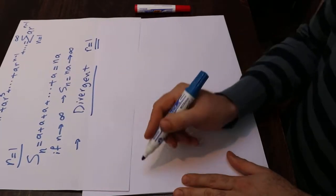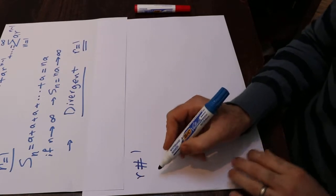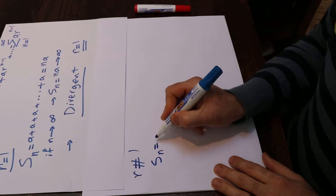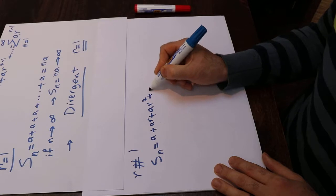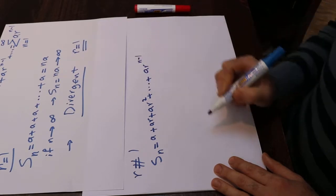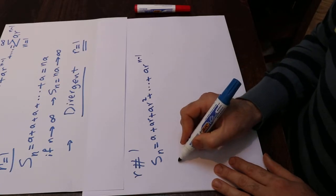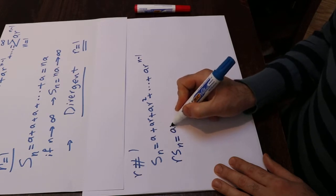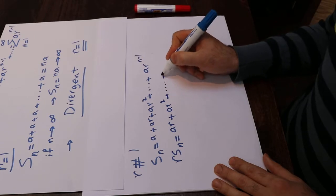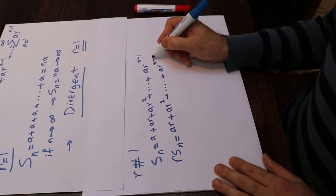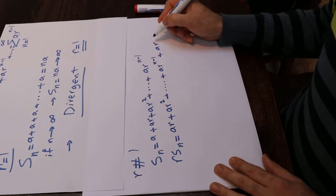Now let's consider another case where R is not equal to 1. You can write SN as A plus AR plus AR² plus AR^(N-1). If you multiply each side of this equation by the factor R, you get RSN equal to AR plus AR² and continuing to AR^(N-1) plus AR^N.